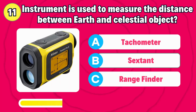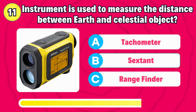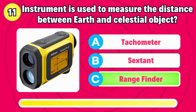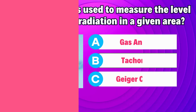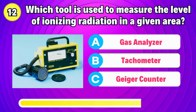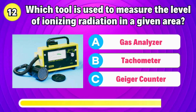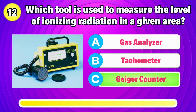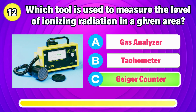What instrument is used to measure the distance between the earth and a celestial object? Correct, it's range finder. Which tool is used to measure the level of ionizing radiation in a given area? Right, it's geiger counter.